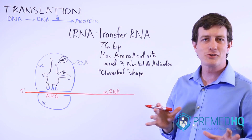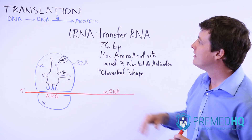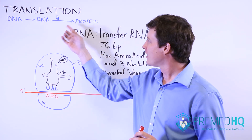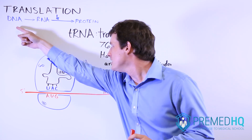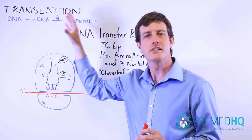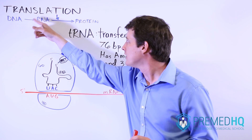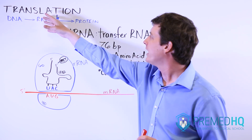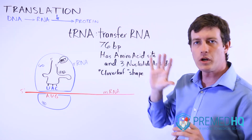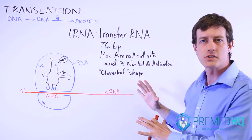Now we'll talk about translation, which is the next component of the central dogma. Remember, DNA to RNA is the process of transcription, and that occurs in the nucleus. And now we get to translation, which occurs out in the cytosol.